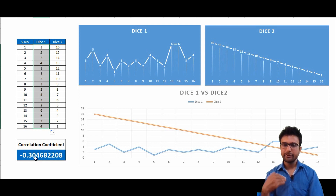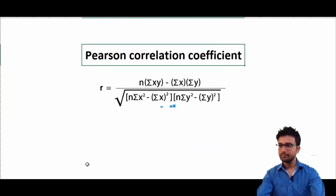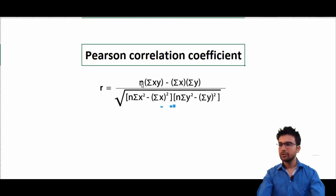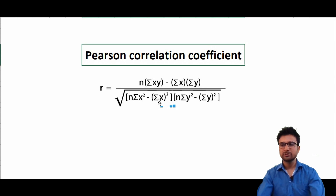So how is this possible — how is it calculating the correlation coefficient? We are going to get into the formula now. Here is the formula for Pearson correlation coefficient, which is given by R: n multiplied by sigma of xy, minus sigma x times sigma y, upon the square root of n times sigma x squared minus sigma x squared, multiplied by n times sigma y squared minus sigma y squared.